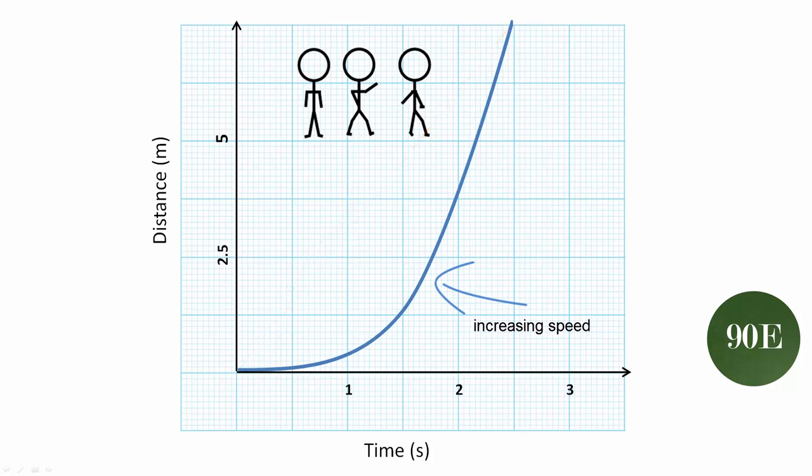In an exam or an assignment you may be asked to calculate the speed at any particular point in a curved distance time graph, so for example at point A. To do this you just need to draw a tangent to the curve and then calculate the slope or the gradient of that tangent. So let's do that here.